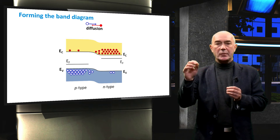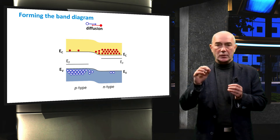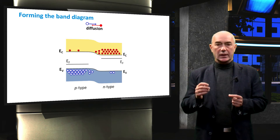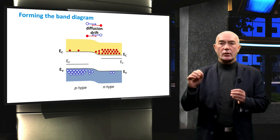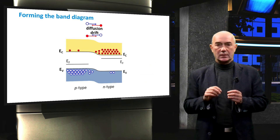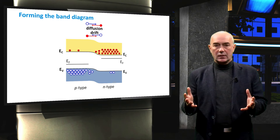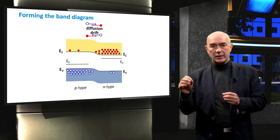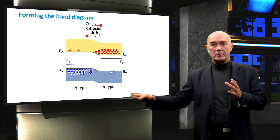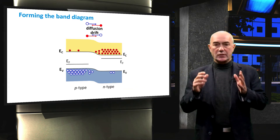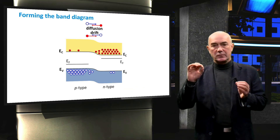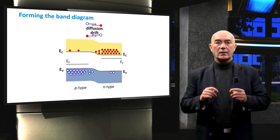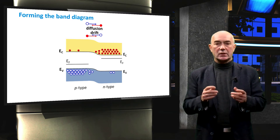As the mobile charges start to diffuse, they leave behind the fixed ionized dopant atoms. The depletion region starts to be formed and the net charge of the ionized dopant atoms builds up there. This build-up of electrostatic charge induces an internal electric field. The electric field acts with force on the charge carriers. The existence of an electric field is expressed in band diagrams by a slope in the band edges. We draw a slope in the valence and conduction band edges to indicate the electric field in the depletion region.